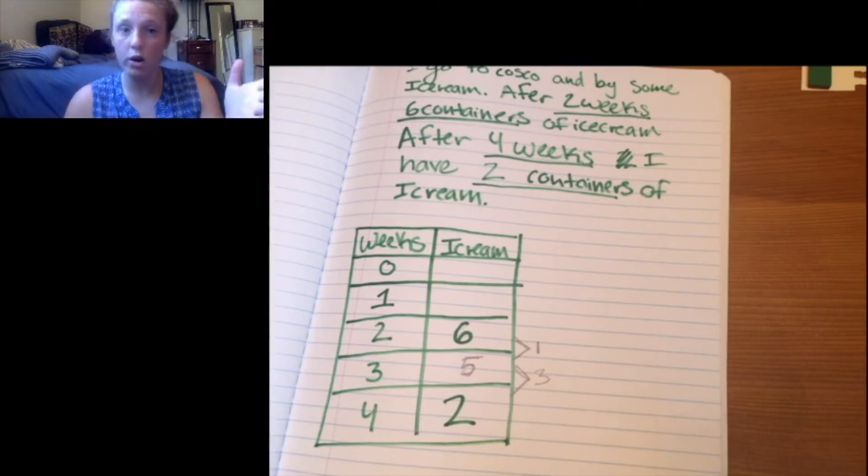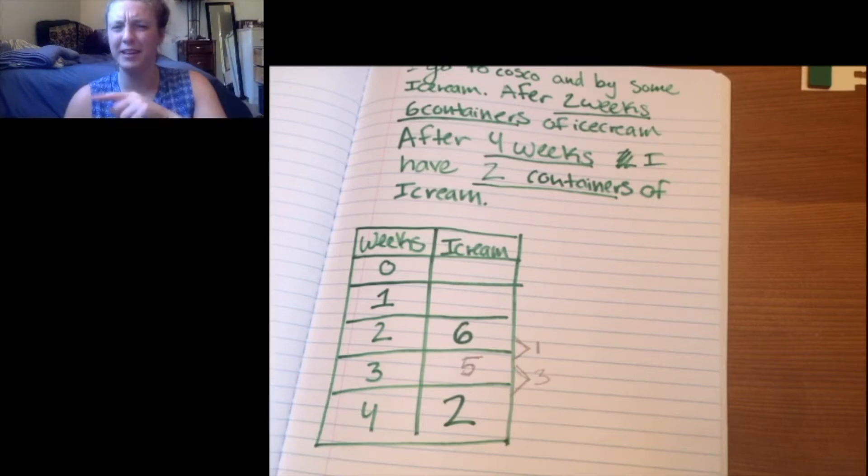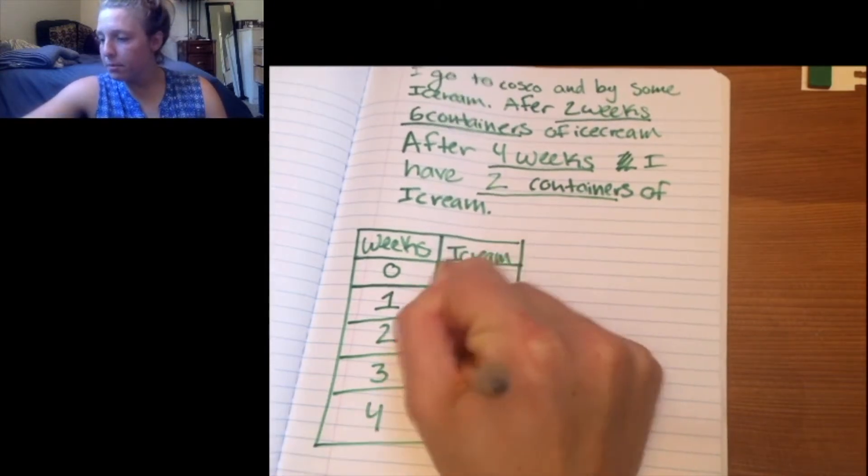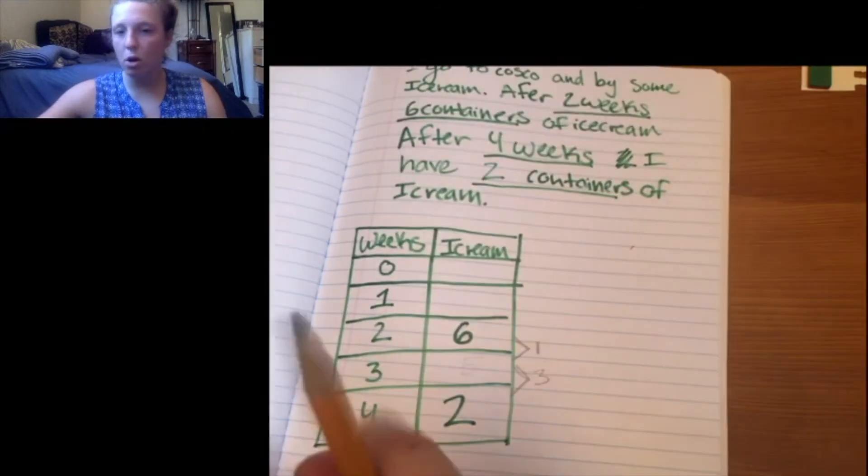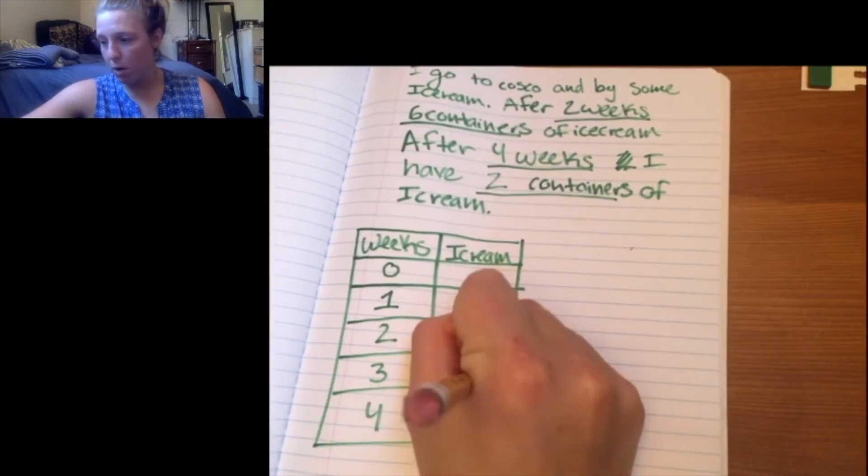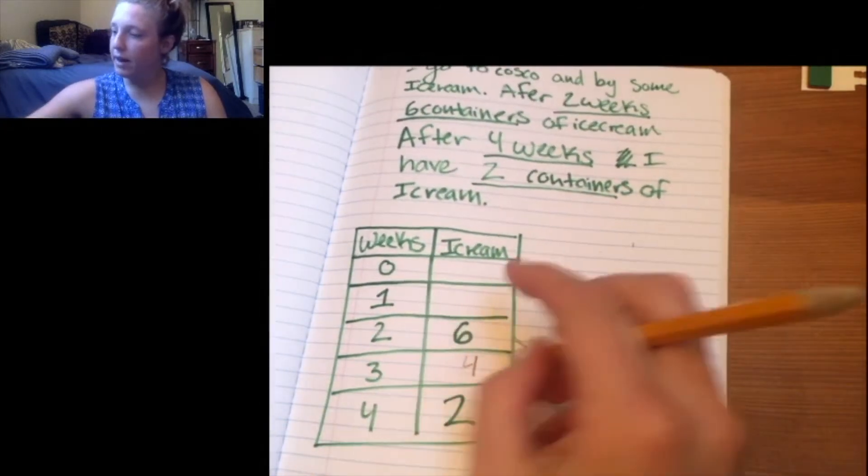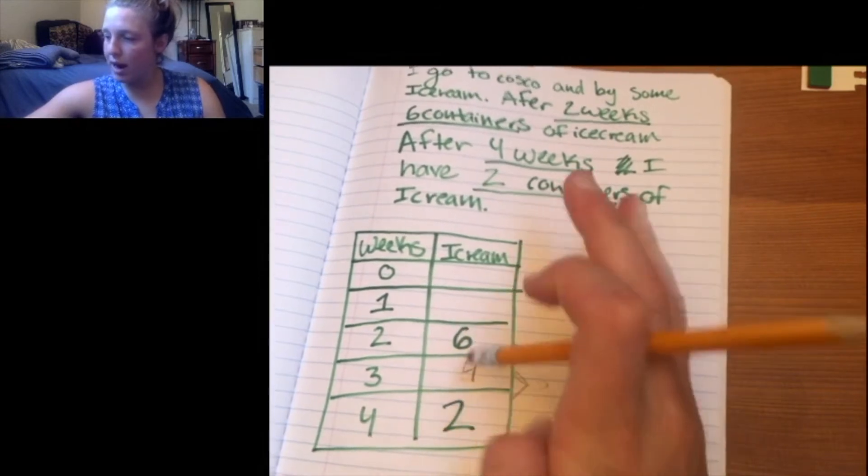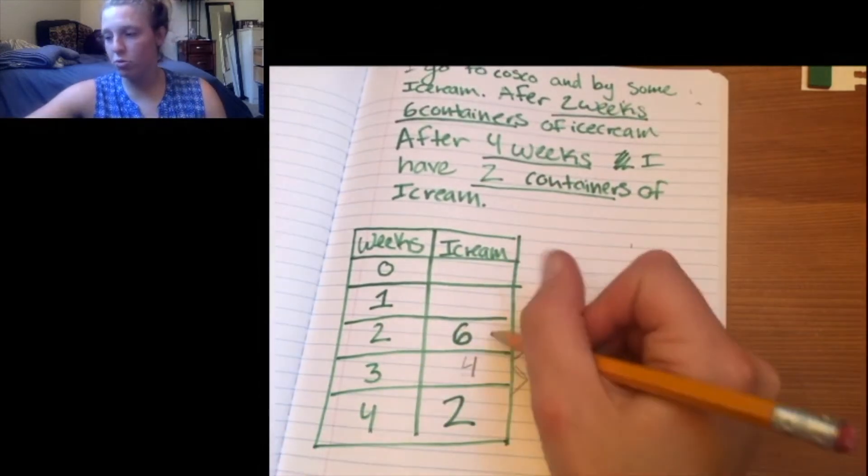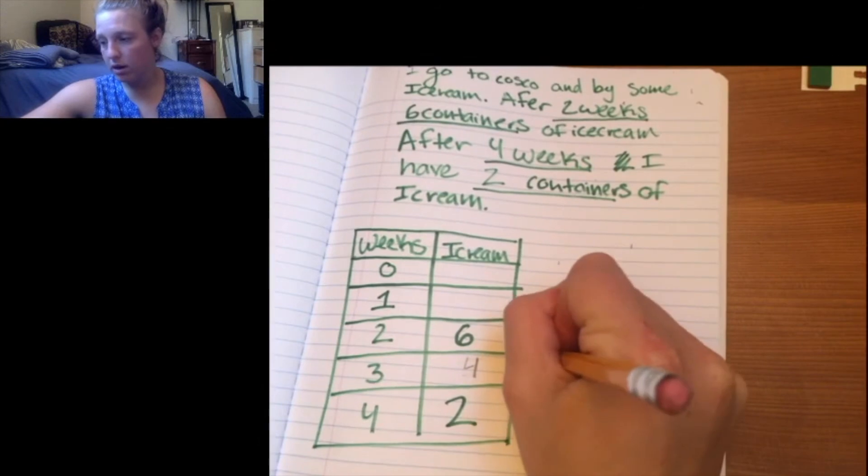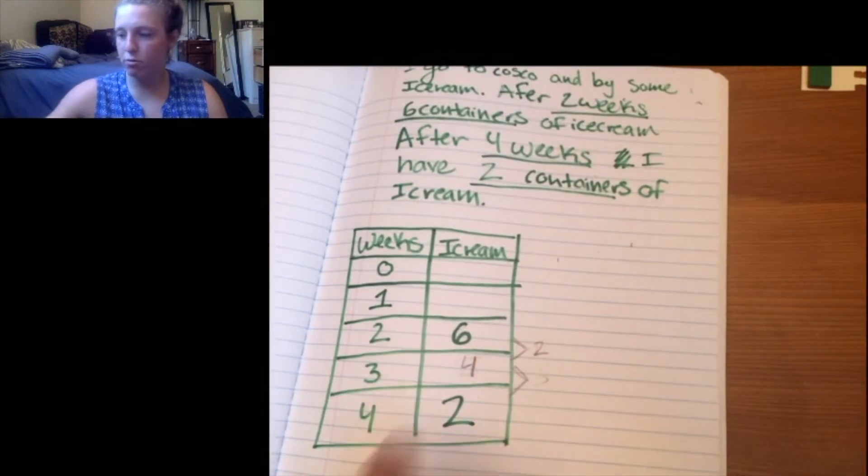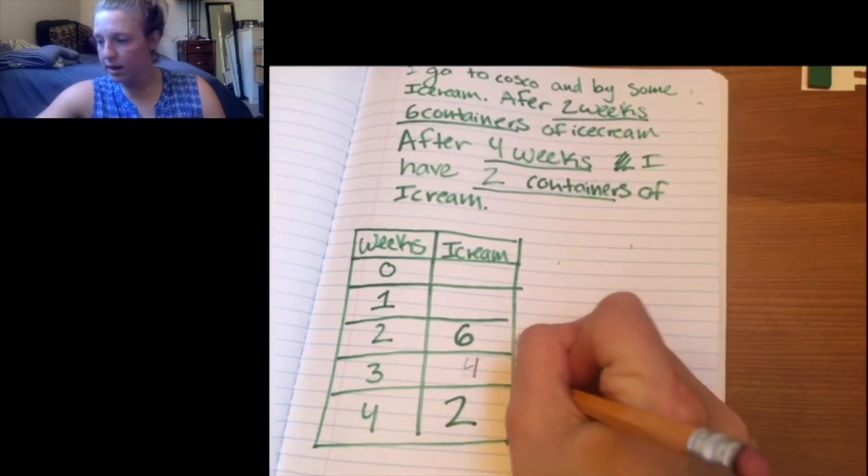Okay, so that doesn't work. So I'm going to try a different number. I know I need to get it closer to six. So I'm going to go up by one, I'm going to put four in here. And so again, I'm going to try here. And so the difference between six and four is two. And the difference between four and two is also two.